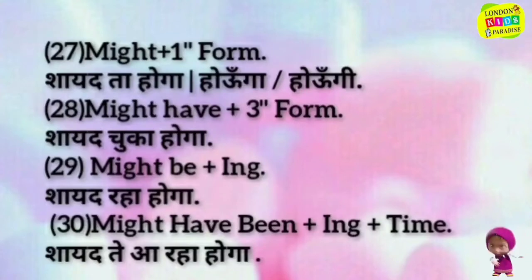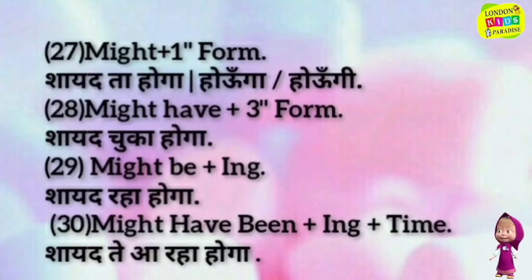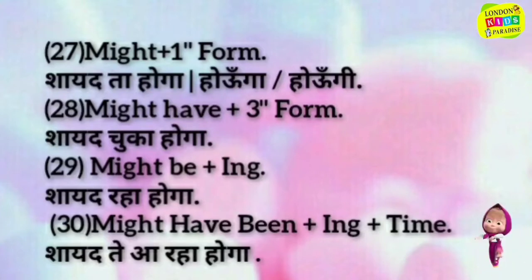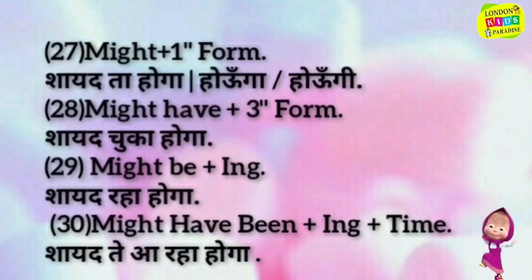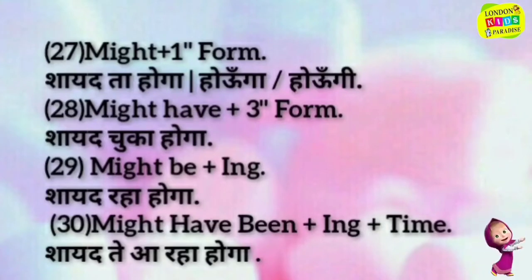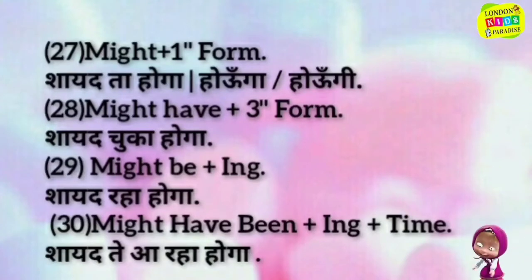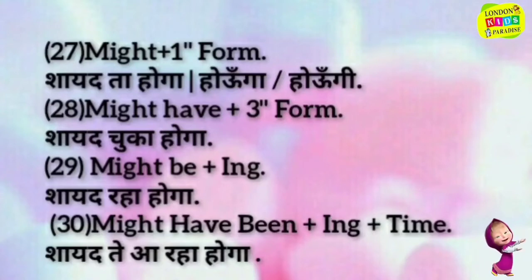Might plus first form — shayad tha hooga, hoon ga, hoongi. Might have plus third form — shayad chuka hoon ga. Might be plus '-ing' — shayad raha hoon ga. Might have been plus '-ing' plus time — shayad teha raha hoon ga.